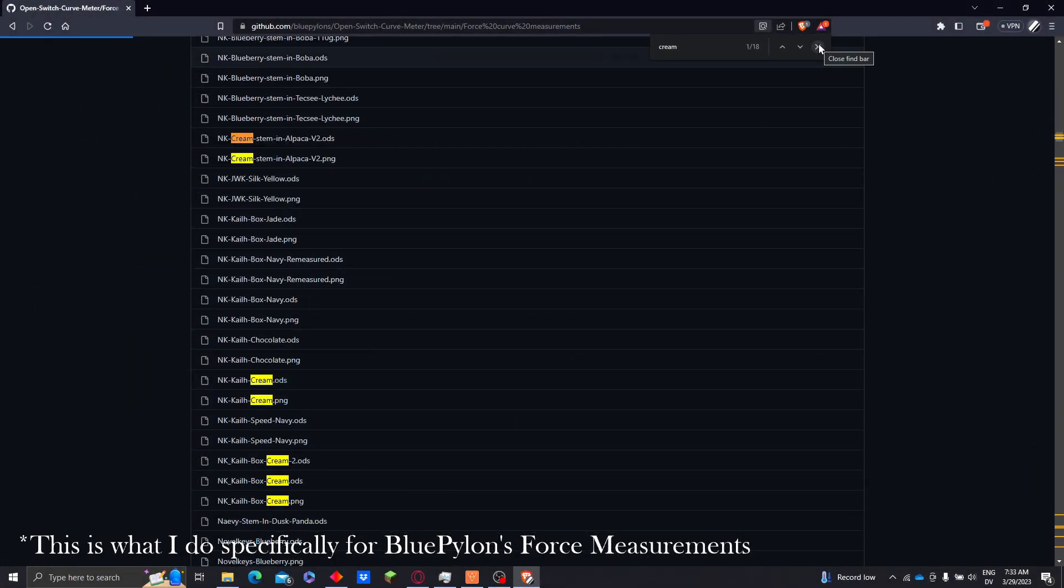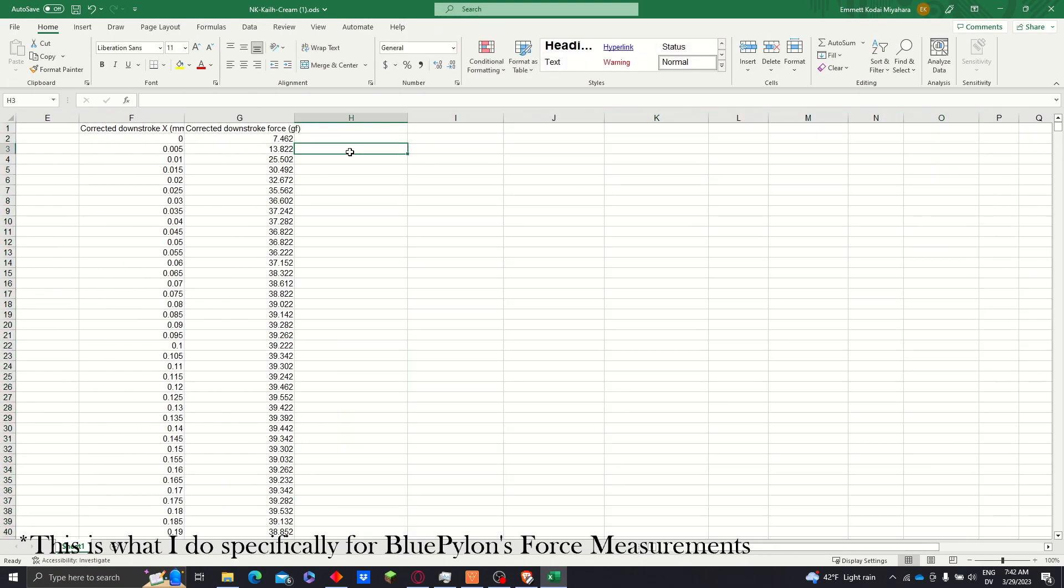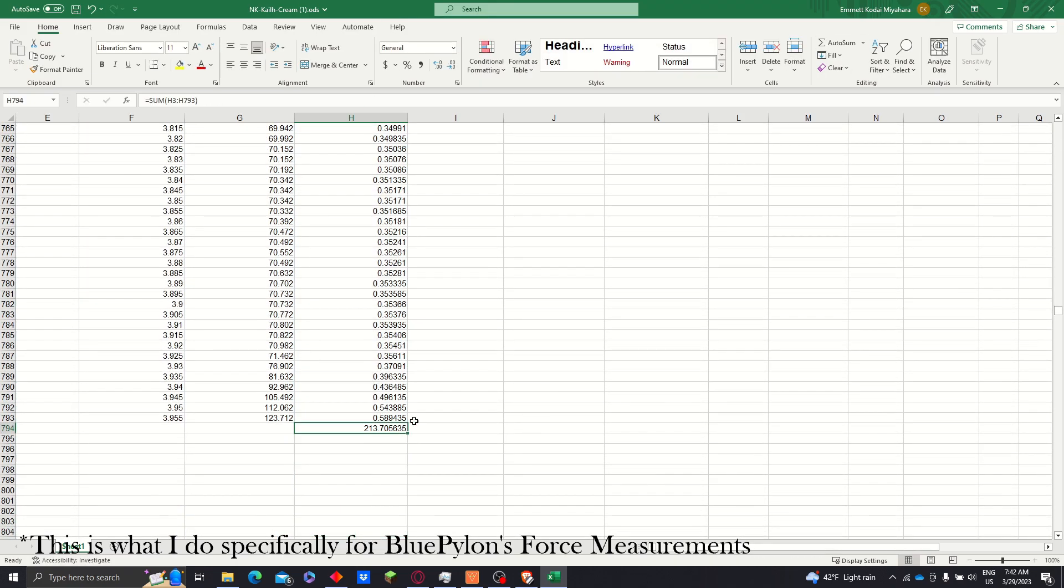I think this can be useful when, for example, if you know you fatigue when typing on a certain switch. You can measure this area for that, and now you'll know if you're going to consider using a switch with a greater area, you'll most likely be fatigued typing on them.